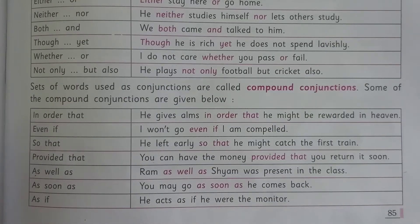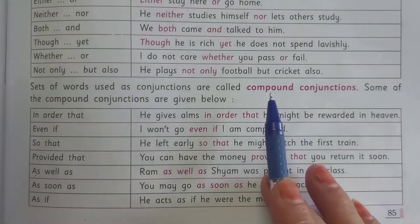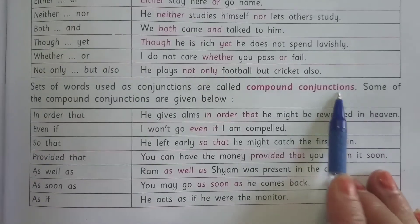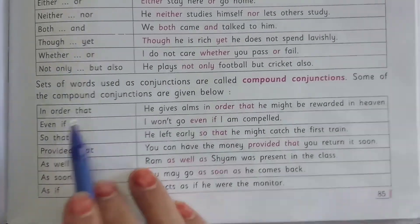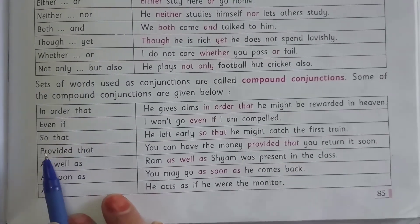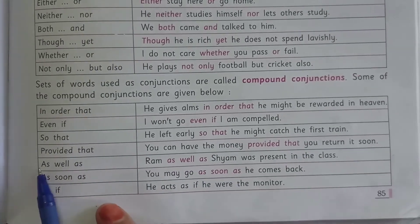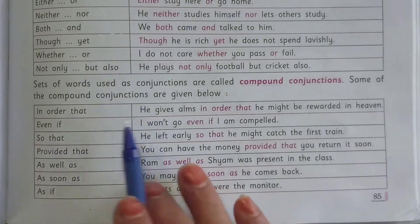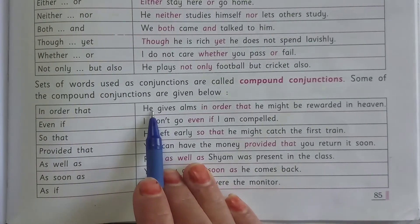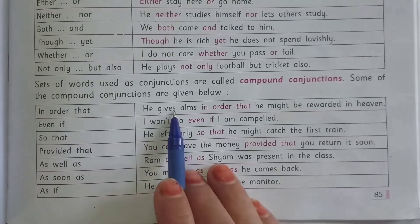Some compound expressions are used as conjunctions and they are called compound conjunctions. A set of words used as a conjunction is called a compound conjunction. Some common compound conjunctions are: in order that, even if, so that, provided that, as well as, as soon as, and as if.